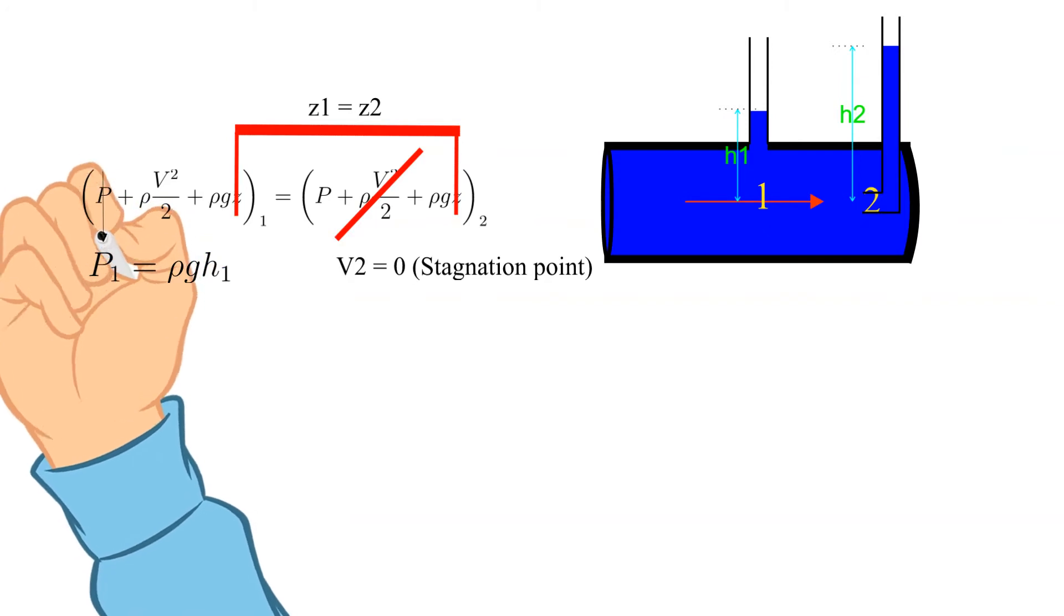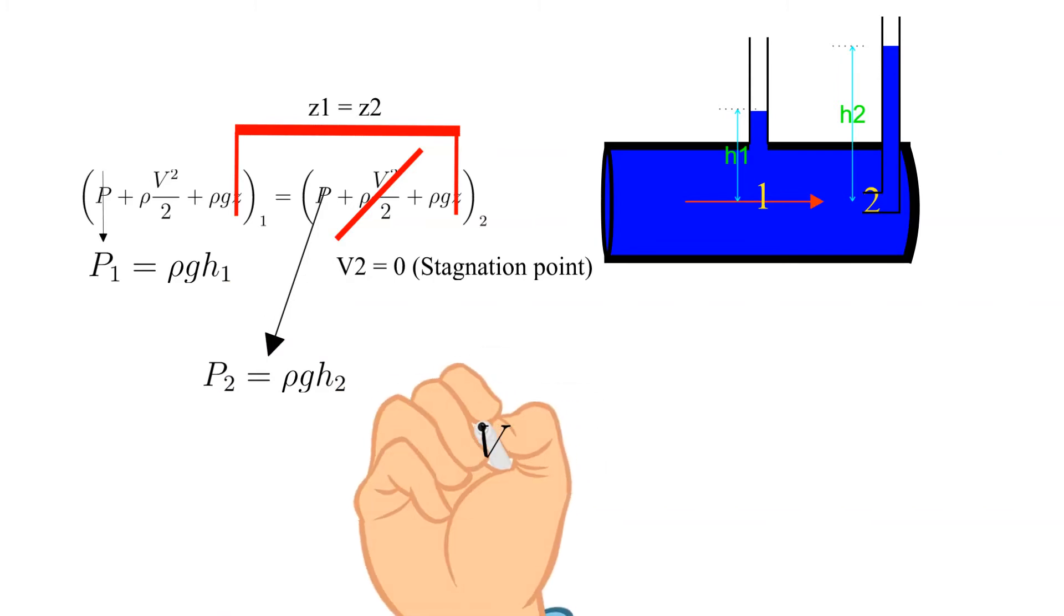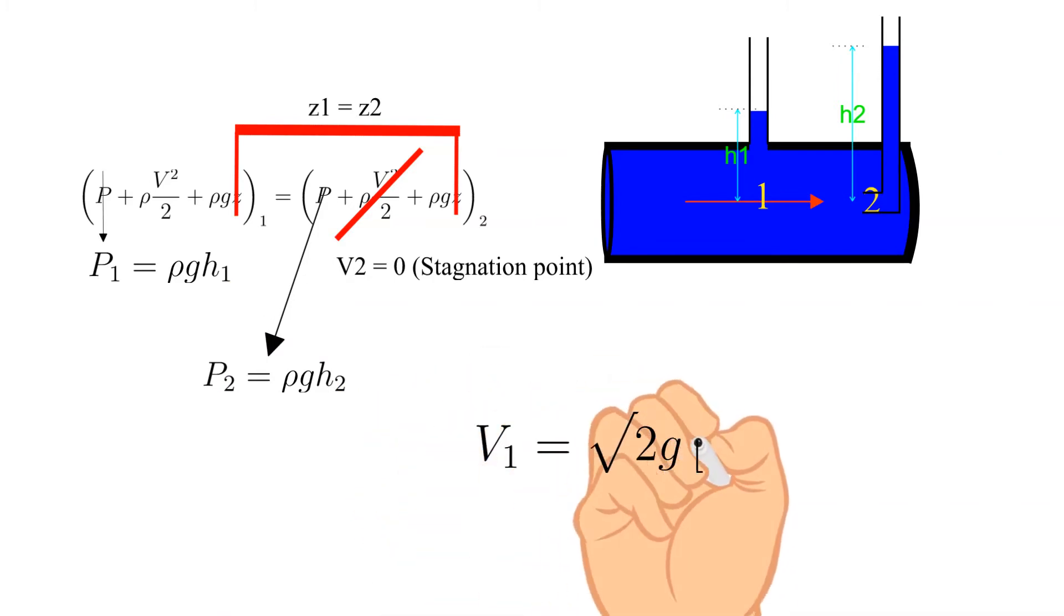We will use the equation relating pressure to a fluid depth, P equals rho GH for both the pressures at point one and point two. Doing some algebra we are left with the velocity at point one equal to the square root of two times G times the difference H2 minus H1.